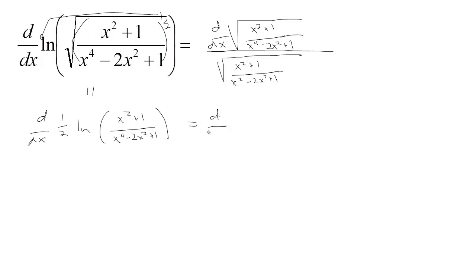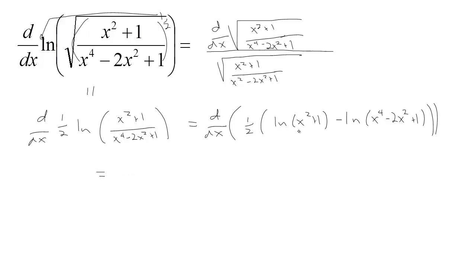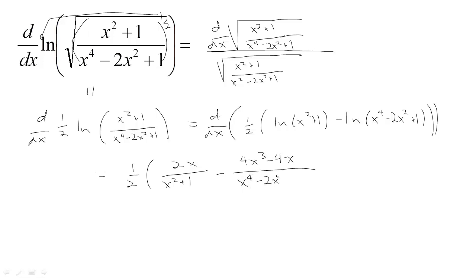Also, we can apply the quotient rule for logs, so before taking the derivative we have 1 half times the natural log of x squared plus 1 minus the natural log of x to the 4th minus 2x squared plus 1. This is much easier to differentiate. The constant 1 half comes through, and the derivative of the natural log of x squared plus 1 is the derivative of the inside, which is 2x, over the inside. Minus the derivative of the other log: the derivative of the inside is 4x cubed minus 4x, all over x to the 4th minus 2x squared plus 1. By breaking it up first, we saved quite a bit of work.